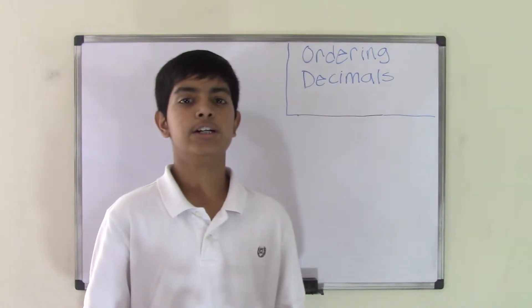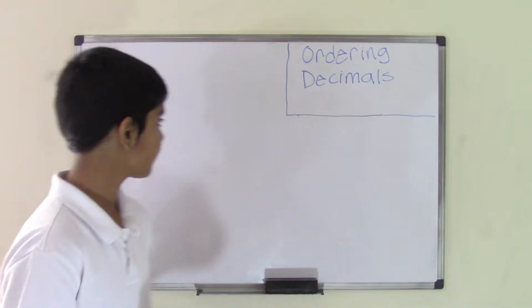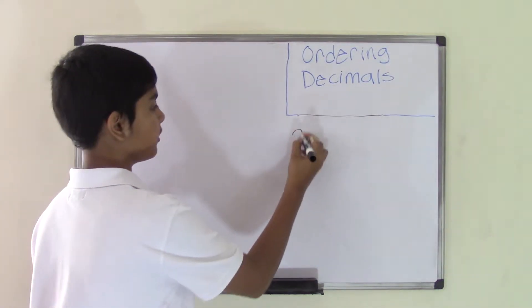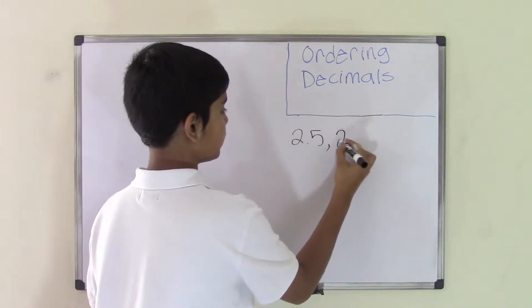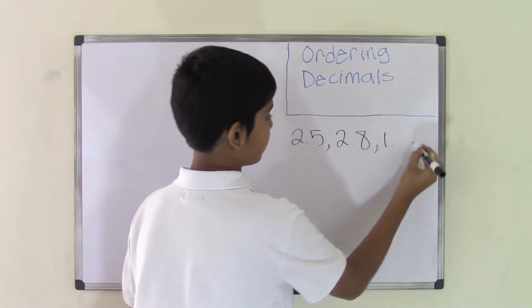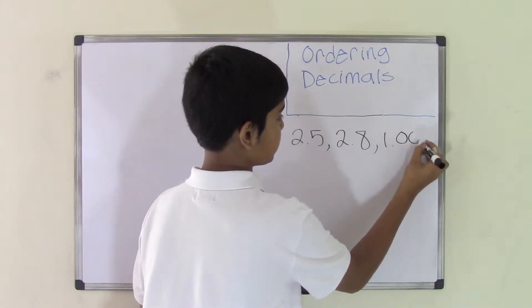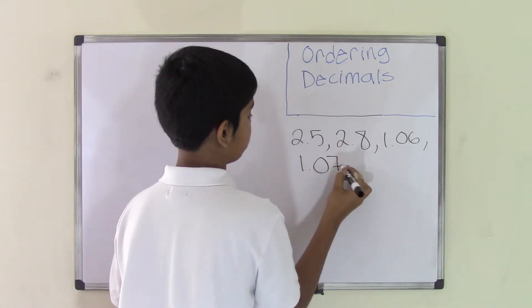I'm going to be talking about how to order a set of decimal numbers. Let's say the set is 2.5, 2.8, 1.06, and 1.07.